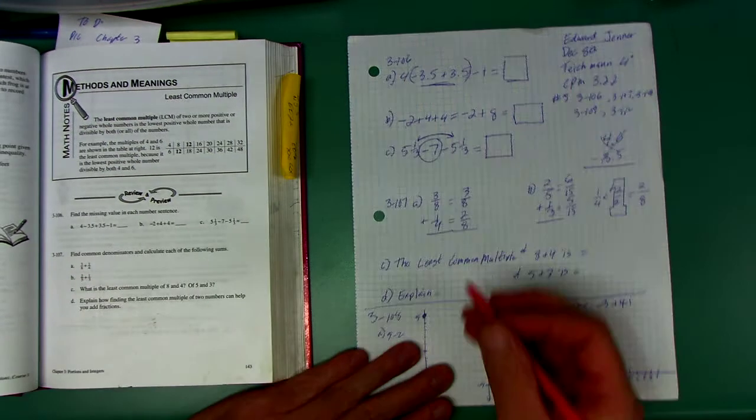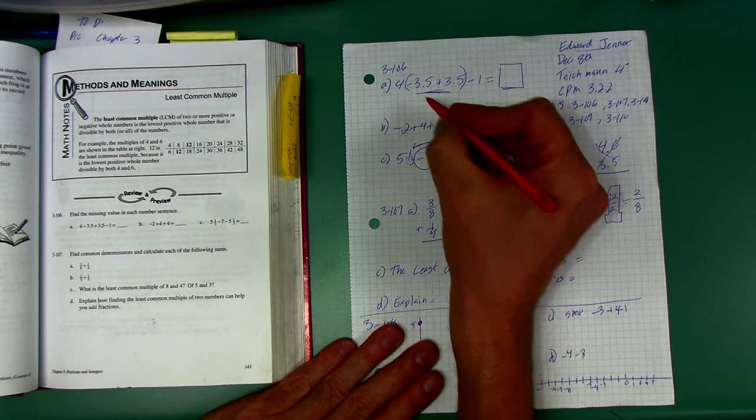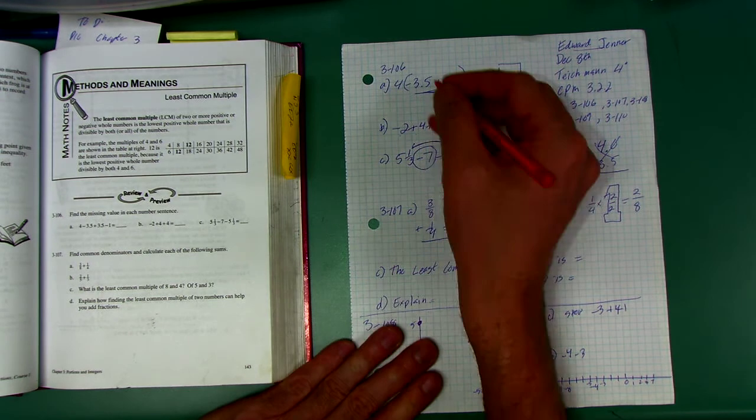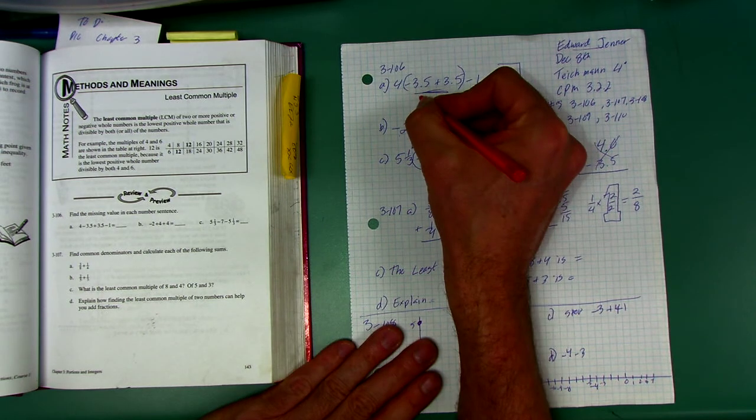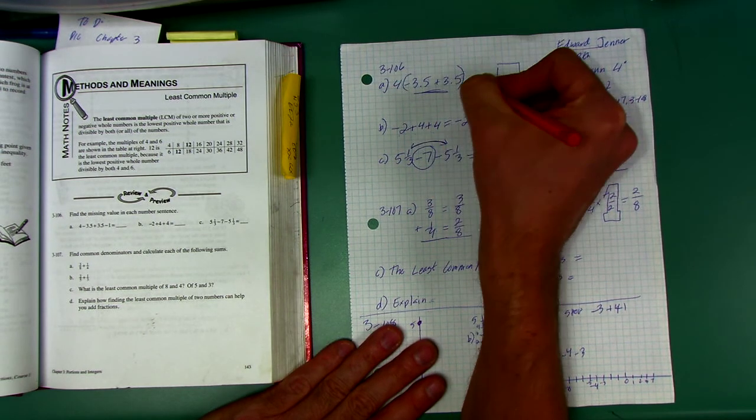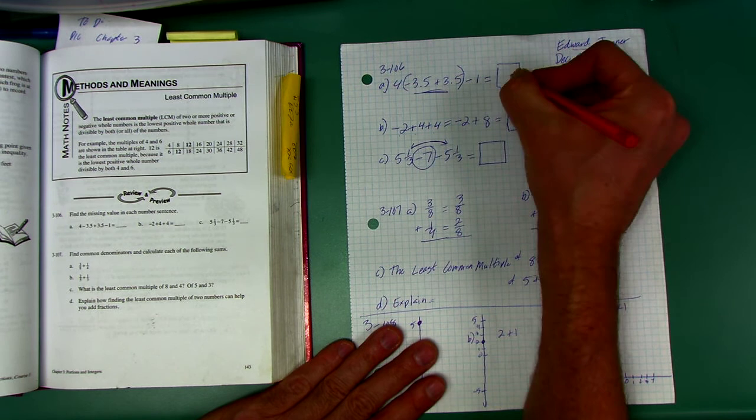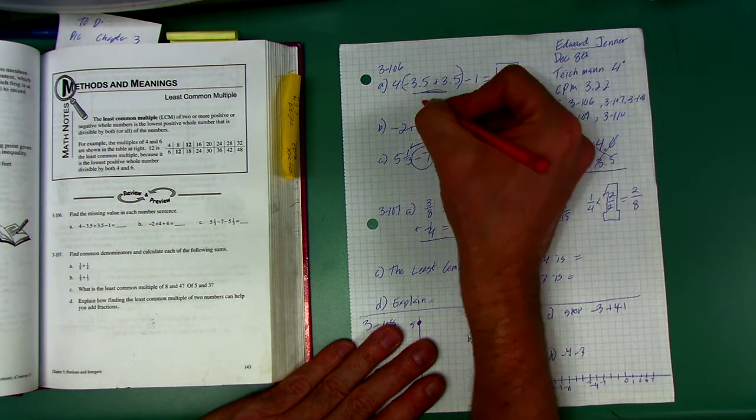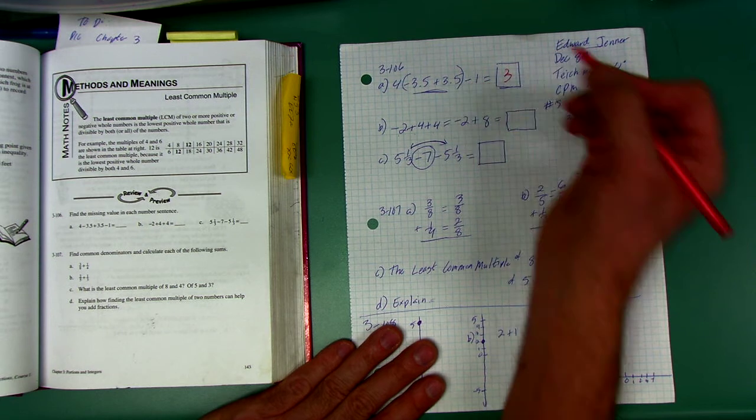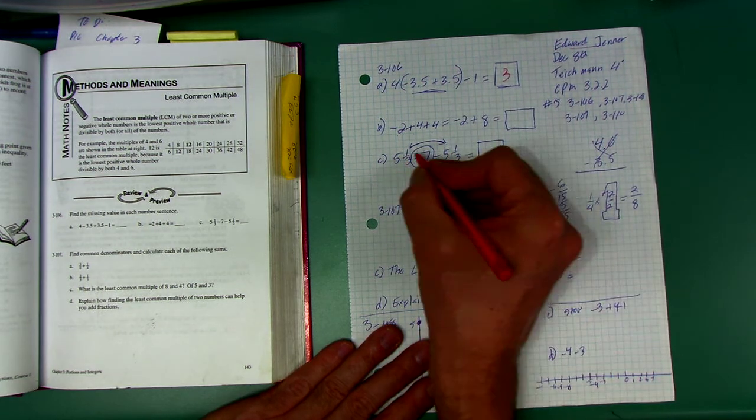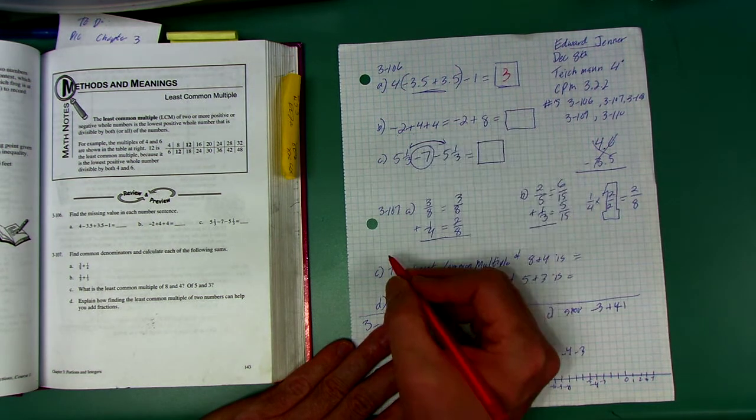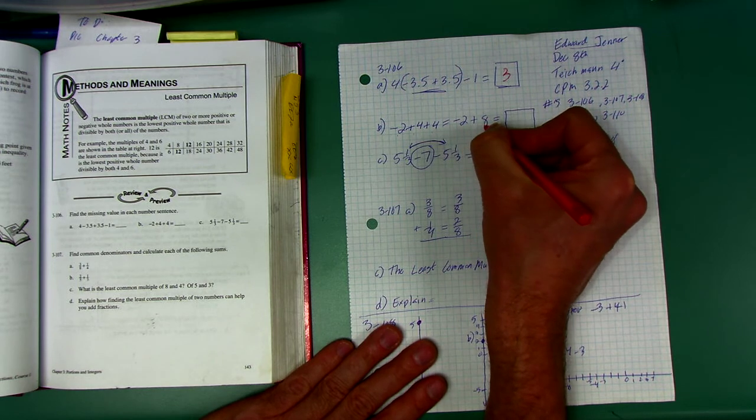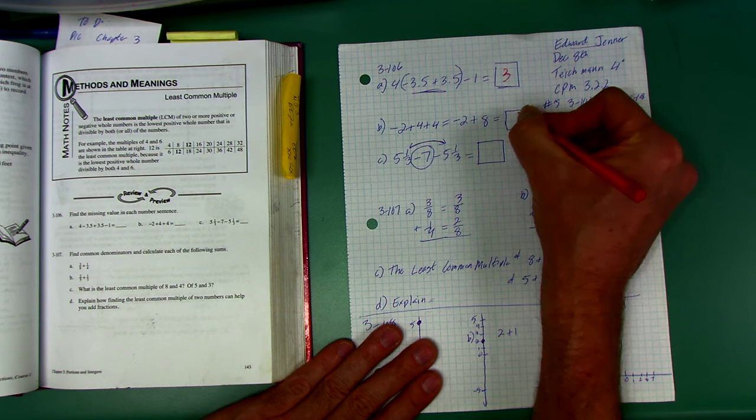All right. Anyway, we already went through starting this. And I put this in parentheses to make you realize that these are opposites. And when you put opposites together, when you add opposites, you get zero. So this ends up being four and zero and then minus one. So four minus one is three. So I start at four. I subtract three and a half. I add three and a half. I'm back at four. Minus one is three.